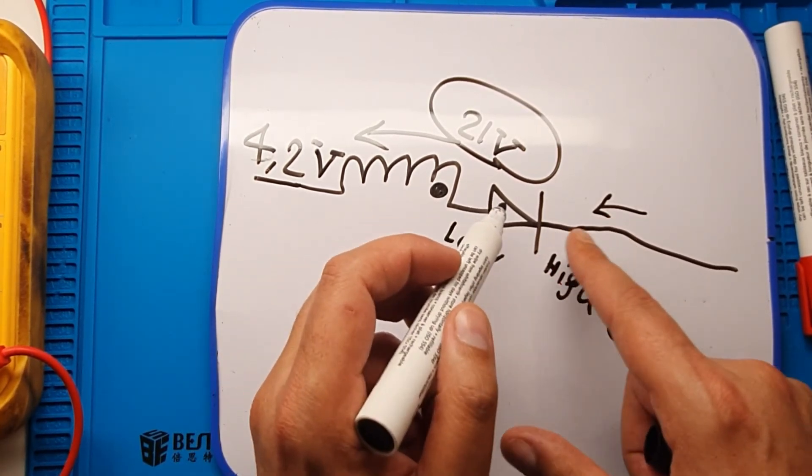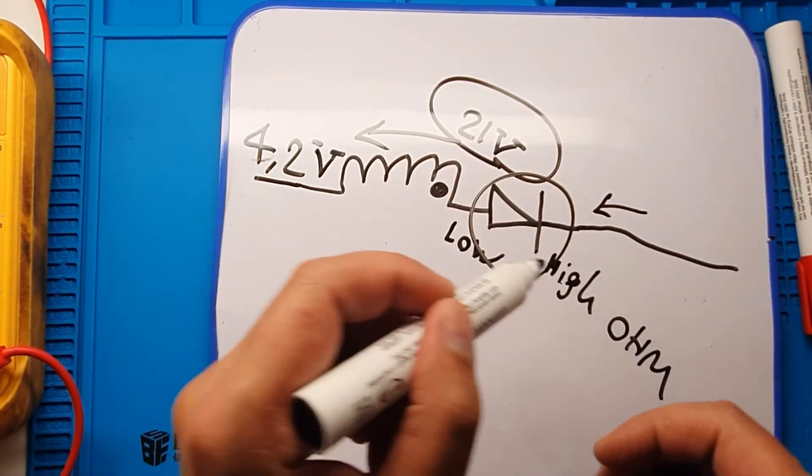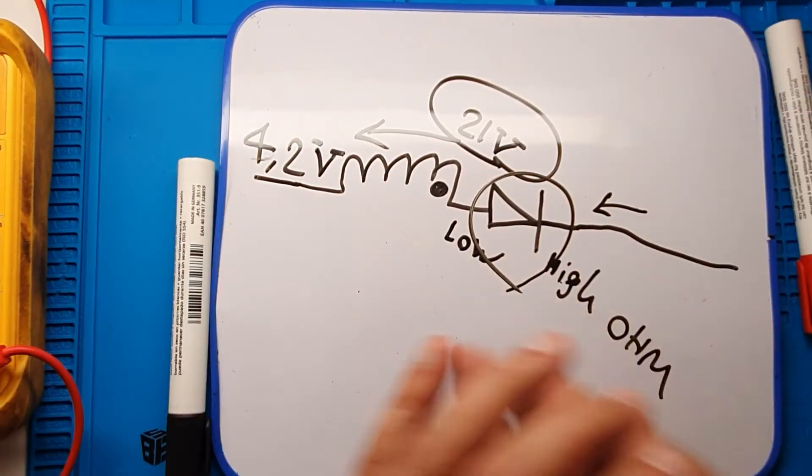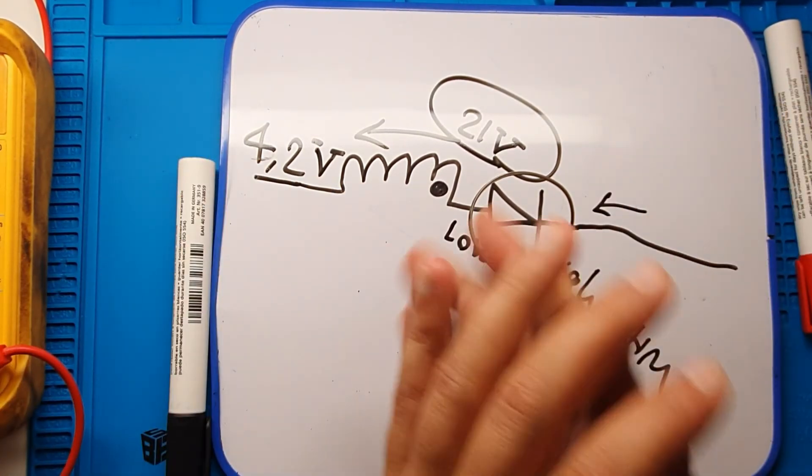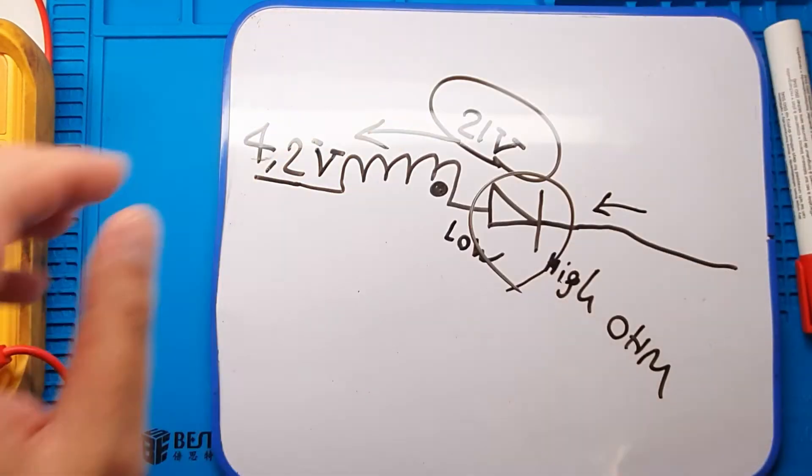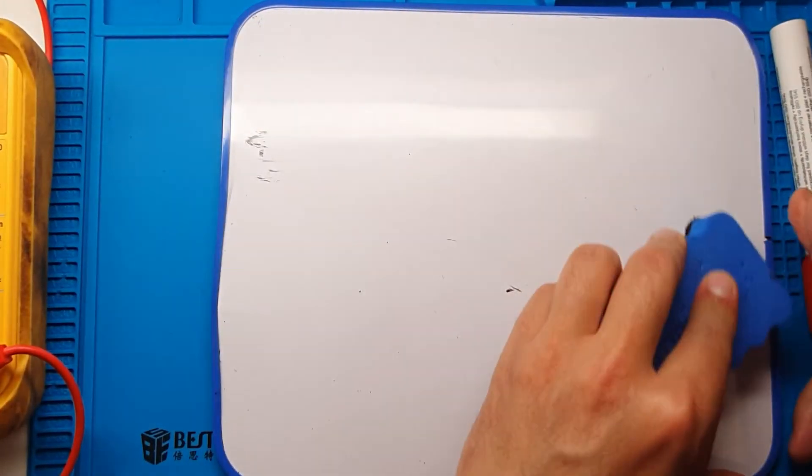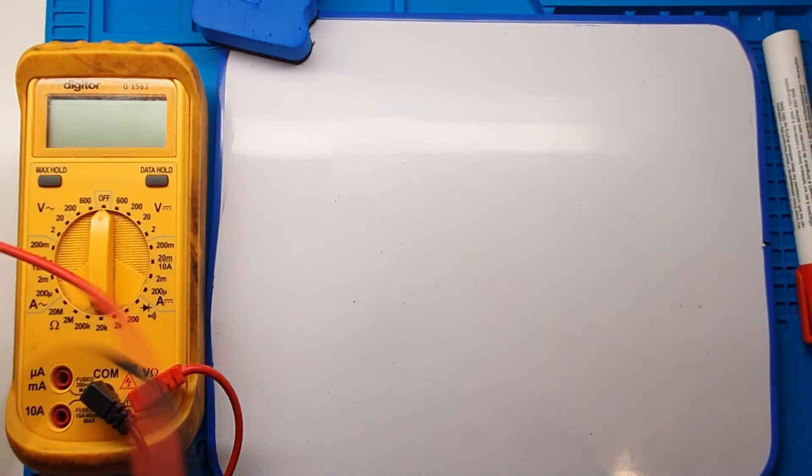And that's it. This is about this component. And now I want to show you how to test this component on the main board or circuit board by using this multimeter.